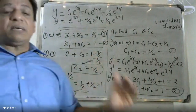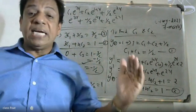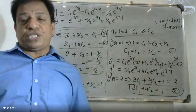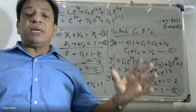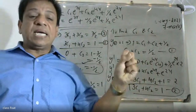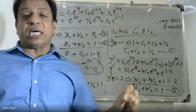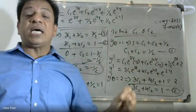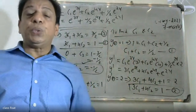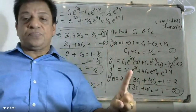The answer is obtained by the method of undetermined coefficients. The right-hand side is e raised to 2x, confirming yp is A times e raised to 2x. Thank you very much.